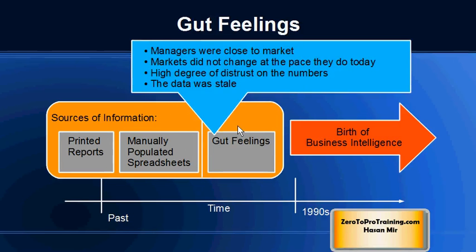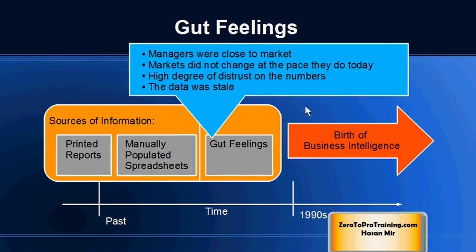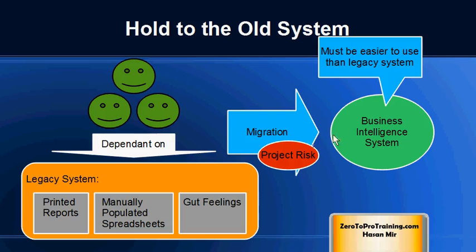In the past, managers were very close to the market and markets were not changing as fast as they are today, which made it possible for them to make decisions based on their feelings. Reports were not available on demand — they ran periodically on certain schedules, so at the time of decision the data was not always fresh. There was also some distrust in reports due to the data entry component involved.